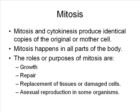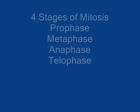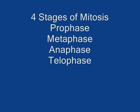Mitosis happens throughout the body from head to toe. The roles or purposes of mitosis are growth, repair, replacement of tissues or damaged cells, and in some organisms, mitosis is responsible for asexual reproduction. There are four distinct stages of mitosis: the first is prophase, second is metaphase, third is anaphase, and fourth is telophase. To help you remember the order, remember the acronym P-M-A-T. After mitosis, cytokinesis divides the cell into two genetically identical cells.